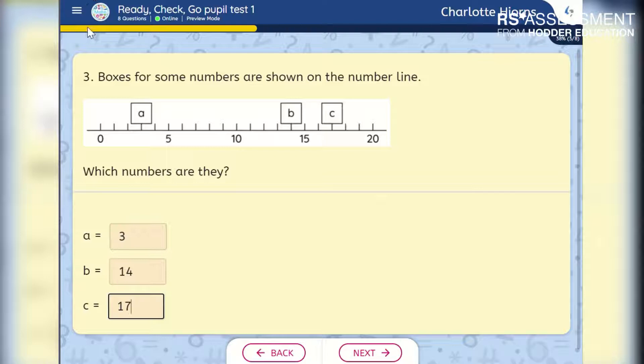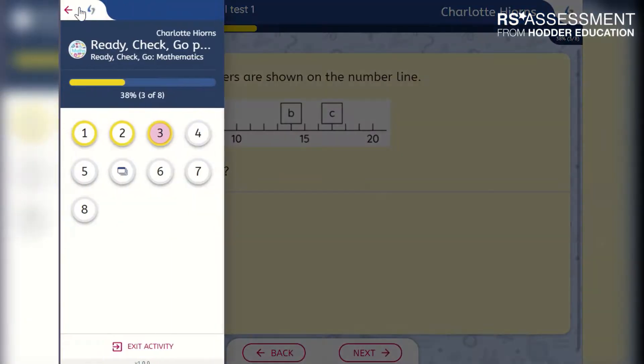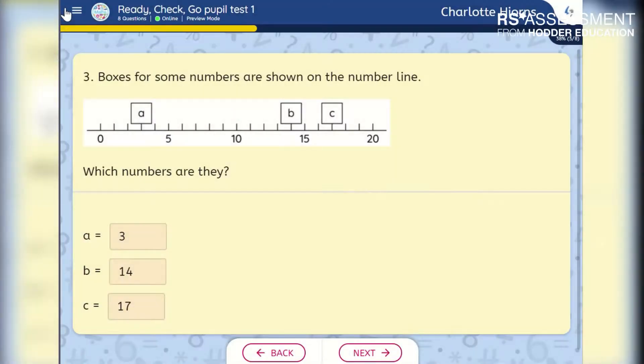The review button in the top corner allows you to see all questions in the test. Yellow is a question that has been answered. Pink is the question we are on now. And grey is a question that is unanswered. Pupils will usually simply use the Next and the Back buttons, but this review panel is available just in case.